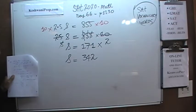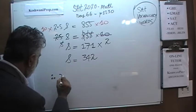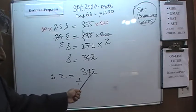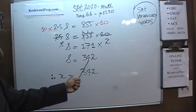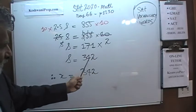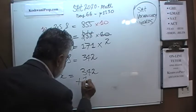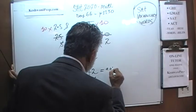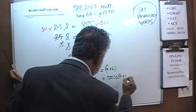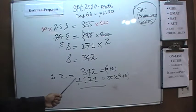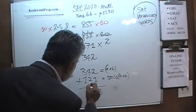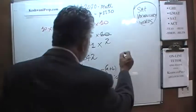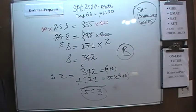S is equal to 342. And how much is our X? If S is 342, then X equals 342 plus 50% of 342. 50% of 342 is 171. So X equals 342 + 171 = 513. The answer is 513, which is answer choice B. That was number 22.